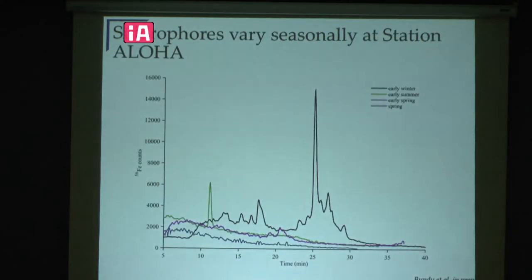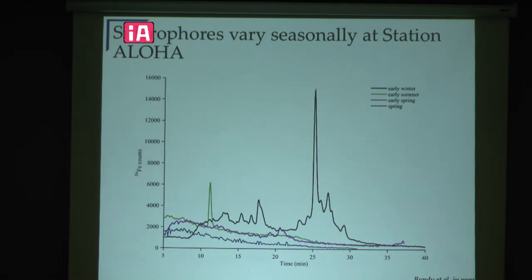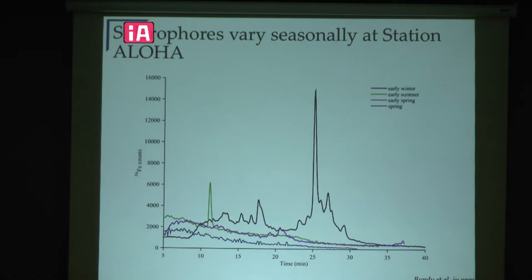First I looked at some surface waters in different seasons — these plots from the ICP-MS show a peak wherever a siderophore is present. The different colors represent samples from different seasons, and you can see there is some seasonality in the presence of these siderophore compounds. That was interesting because we don't think of Station ALOHA as being an iron-limited system, yet that's one of the reasons we think these compounds are being produced.